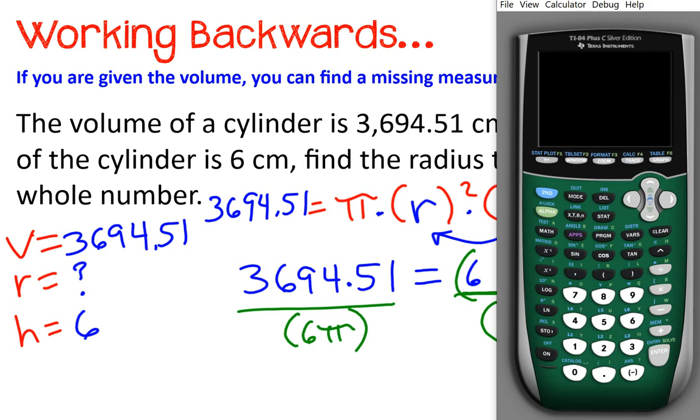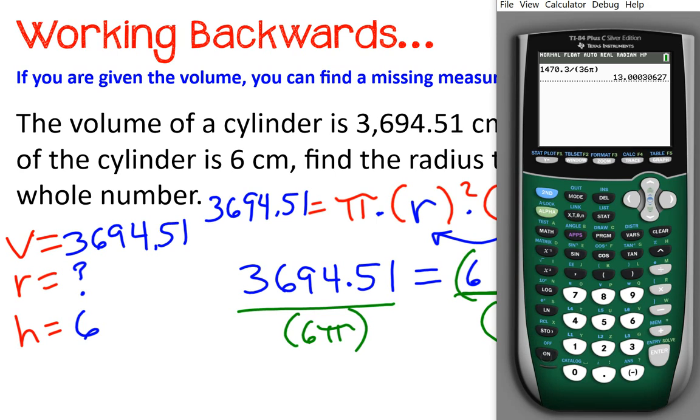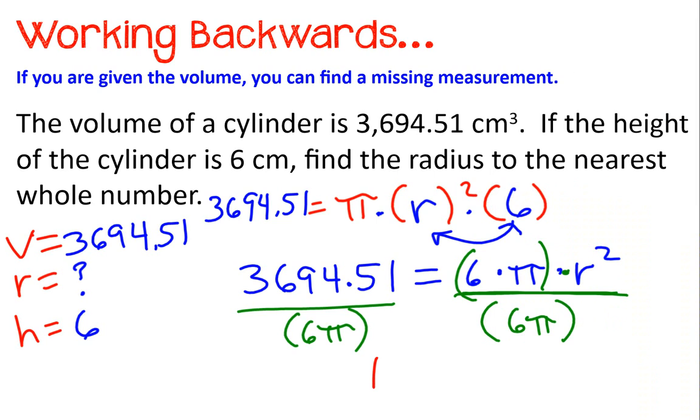I'm going to get my calculator out. I'm going to turn it on. And I'm going to clear it out and start typing my left equation, left side of the equation here. So what I've got is 3694.51 divided by parentheses, 6 times pi. And that gives me 195.99999. So I'm going with a radius of about 196.